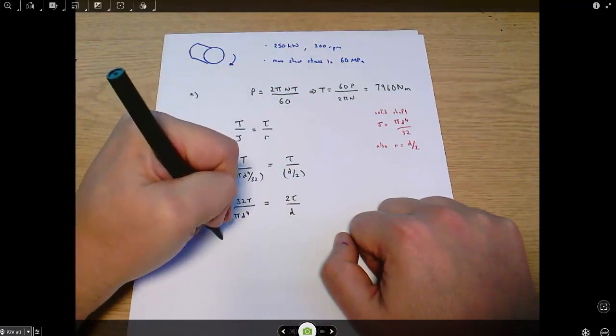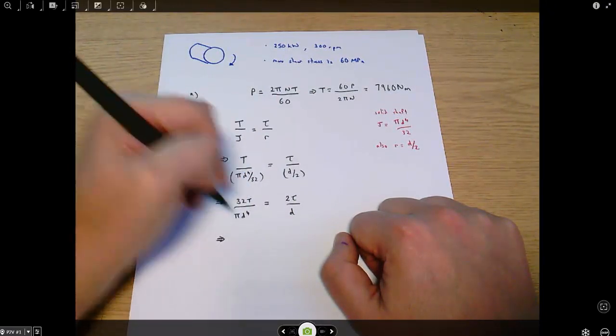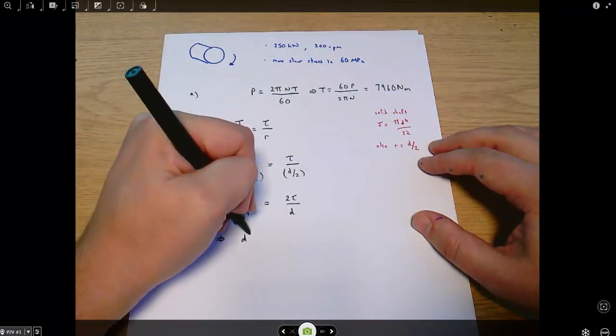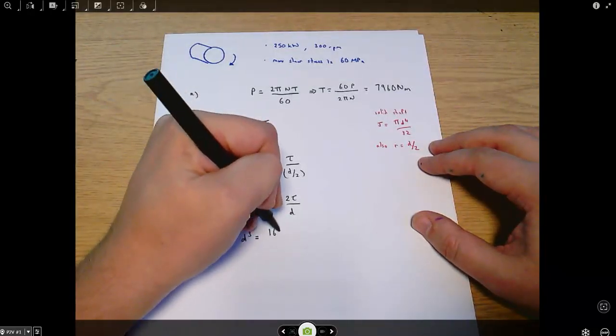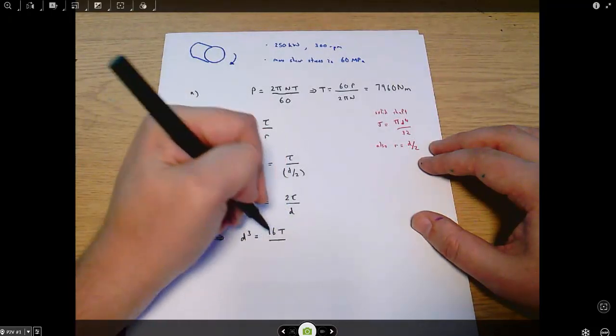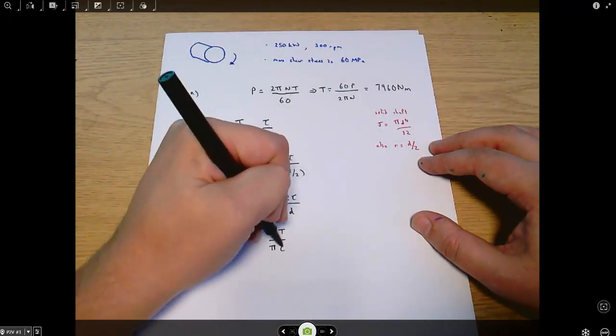When I rearrange that, you can take as many steps as you want here, but you'll end up with d cubed equals 16T over pi times tau.